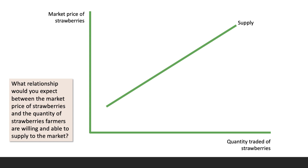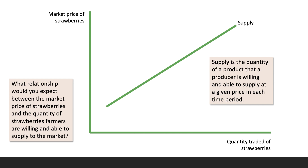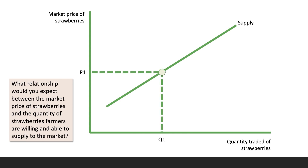price-supply relationship. The supply curve normally slopes upwards from left to right. Supply is defined as the quantity of a product — in this case strawberries — that producers are willing and able to supply at each price in a given time period. When the price is fairly low there'll be a quantity Q1. If the price is higher at P2, there's a greater incentive to increase production — perhaps invest in growing an extra harvest of strawberries.